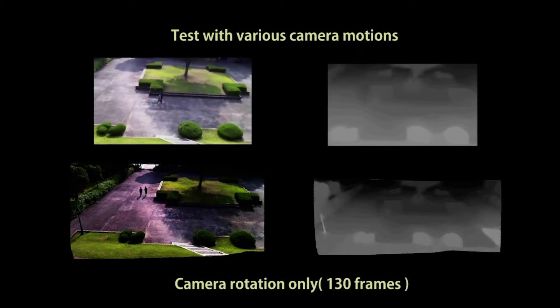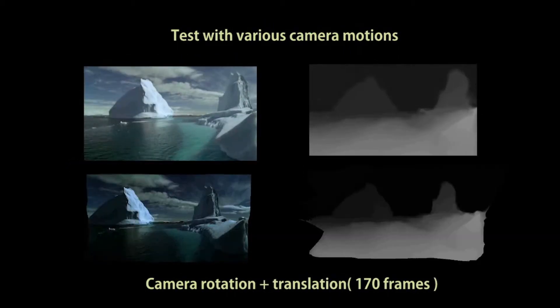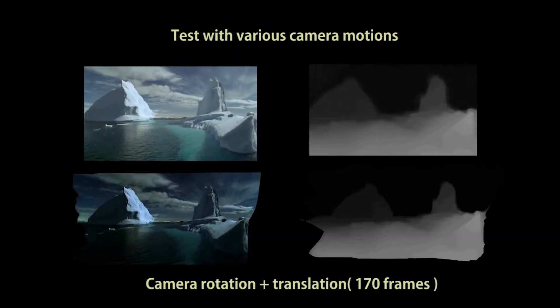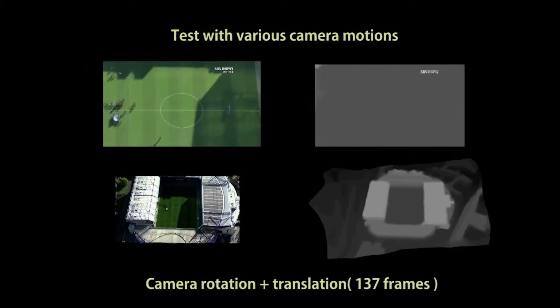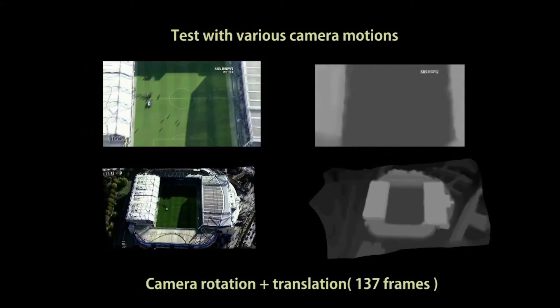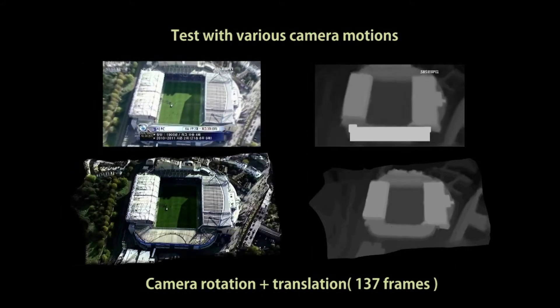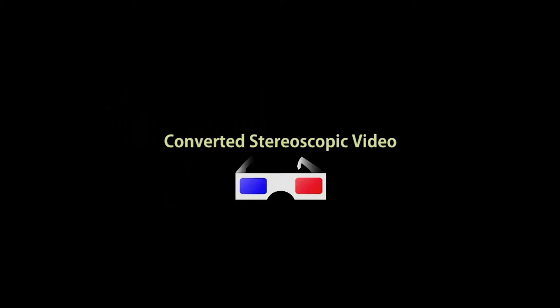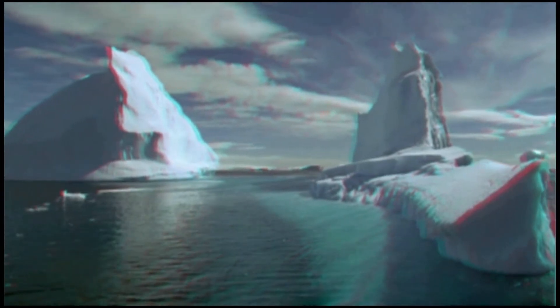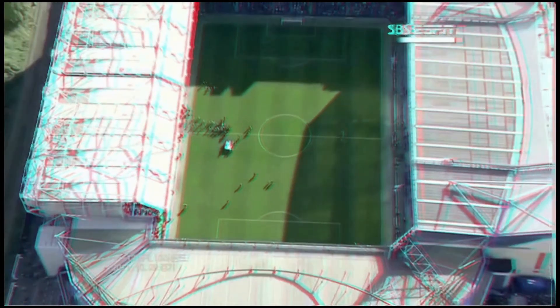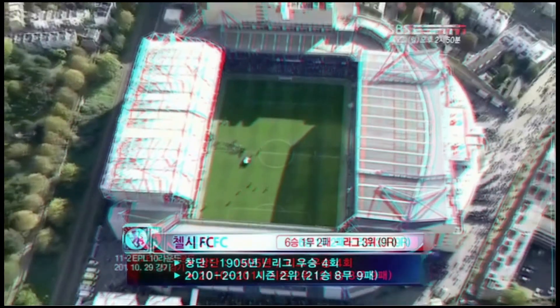Our approach greatly simplifies the required user interaction during the assignment of depth and allows for relatively free camera movement during the generation of a panoramic image. We demonstrate the effectiveness of our method by showing stereo converted sequences with various camera motions. The quality of the estimated depth is high enough for the purposes of 2D to 3D stereo conversion.